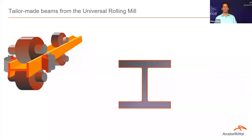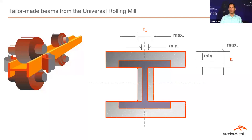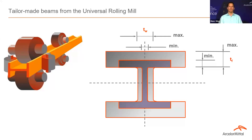How are beams rolled? In principle, you have a set of rolls with a distance defining the thickness of flanges and webs, and of course these thicknesses can be adjusted. So in one rolling campaign, you can roll different sizes. You may know the HE series — HEA, HEB, HEM — they are rolled for one size. For example, HE300, we roll HEA, HEB, and HEM in one rolling campaign. This is quite effective in terms of production, and that's one reason why steel is so economical.